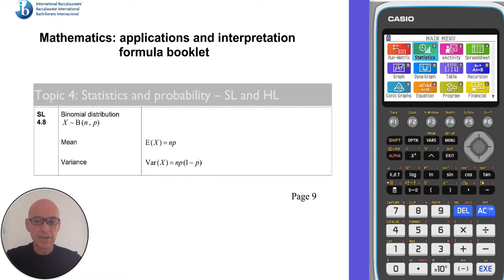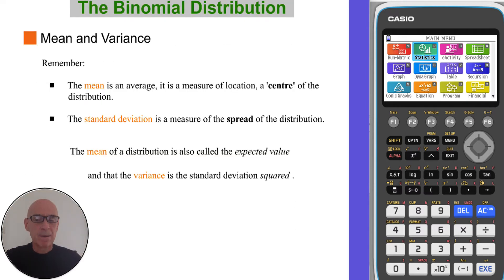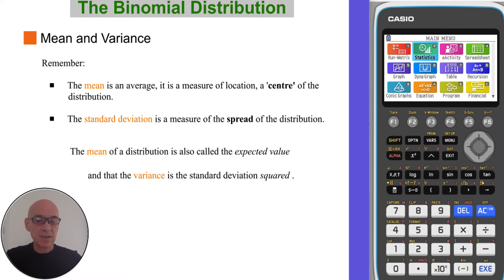The formulas for the mean and variance of a binomial distribution are given on page nine of your formula booklet, as you can see here. So remember that the mean is an average — it's a measure of location or a centre of the distribution — and standard deviation is a measure of the spread of the distribution. The mean of a distribution is also called the expected value, and the variance is the standard deviation squared.